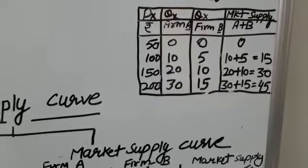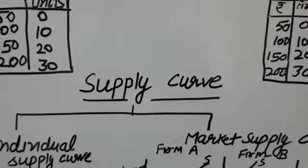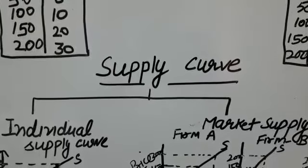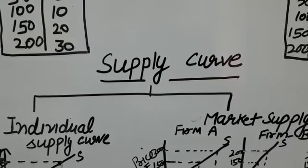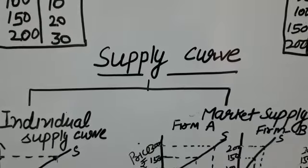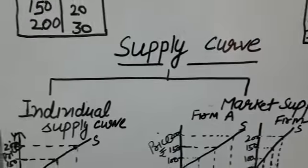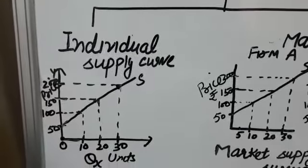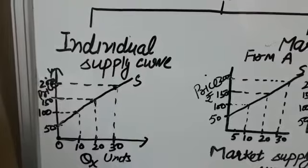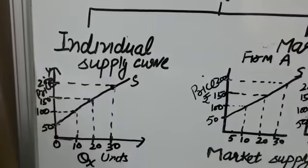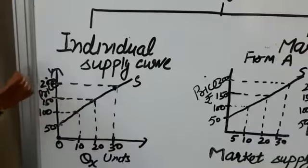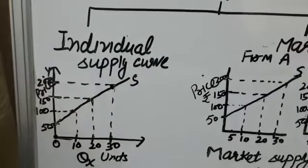Now, supply curve. A supply curve is a graphic presentation of the supply schedule showing various quantities of a commodity offered for sale at different possible prices of that commodity. Like supply schedule, the supply curve also has two aspects: individual supply curve and market supply curve. The individual supply curve is a graphic presentation of the supply schedule of individual firms in the market. It slopes upward, indicating a positive relationship between price and quantity supplied.